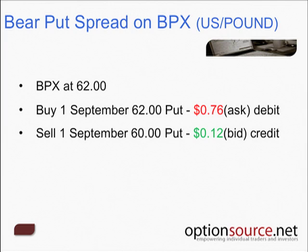In order to offset some of that cost, I can look at the September 60-strike puts and see that there is a bid price of 12 cents. The market maker is saying if you want me to buy this option from you, it's 12 cents per contract, or $12 per contract. That is the bid price, which becomes the credit received into my account. With that in mind, we've lowered the net cost basis of this trade from 76 cents down to 64 cents.